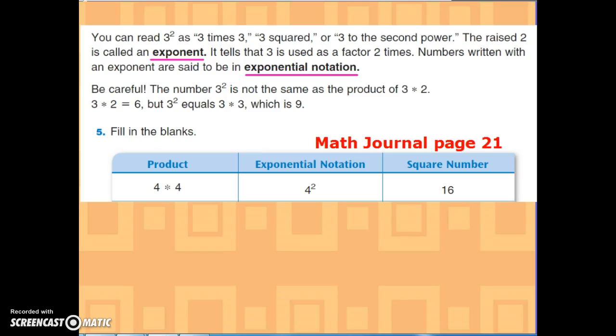All right, let's move on. You can also write numbers with exponents. So if we take a look, as you read three to the second, it really means three times three. We can also say three squared, and since we're working with square numbers, that's going to be really helpful. We can also say three to the second power.